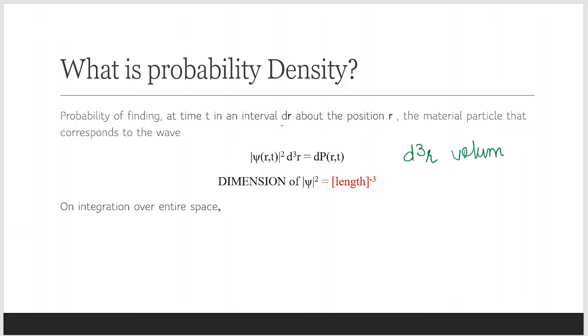This is the d-cubed volume element. So in this r to r plus dr range, the probability of finding the particle in this range and in this volume element is this probability.